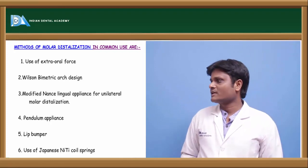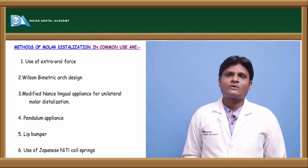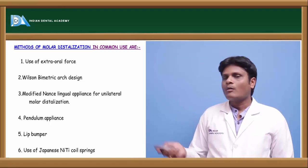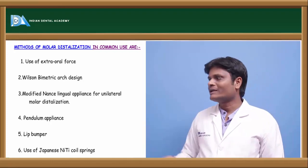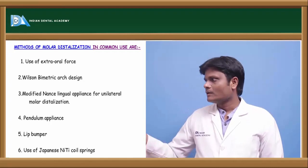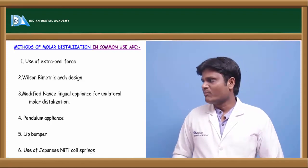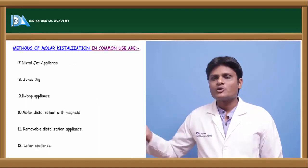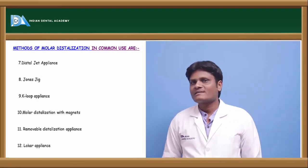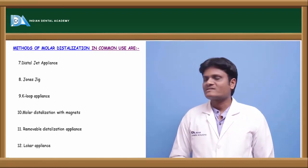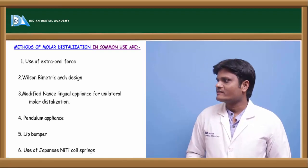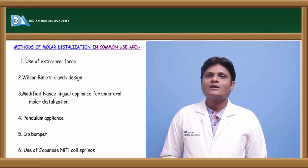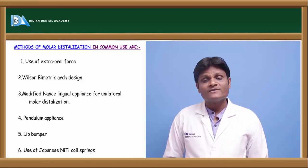Common appliances used for distalization include extraoral forces like headgears, Wilson's biometric arch design, modified Nance lingual appliance for unilateral molar distalization, pendulum appliance, lip bumper, Niti open-coil springs, distal jet appliance, Jones jig, K-loop appliance, molar distalization with magnets, removable distalization appliance, and Lokar appliance. Among these, the pendulum appliance, extraoral forces, and Niti coil springs are most commonly and easily used.